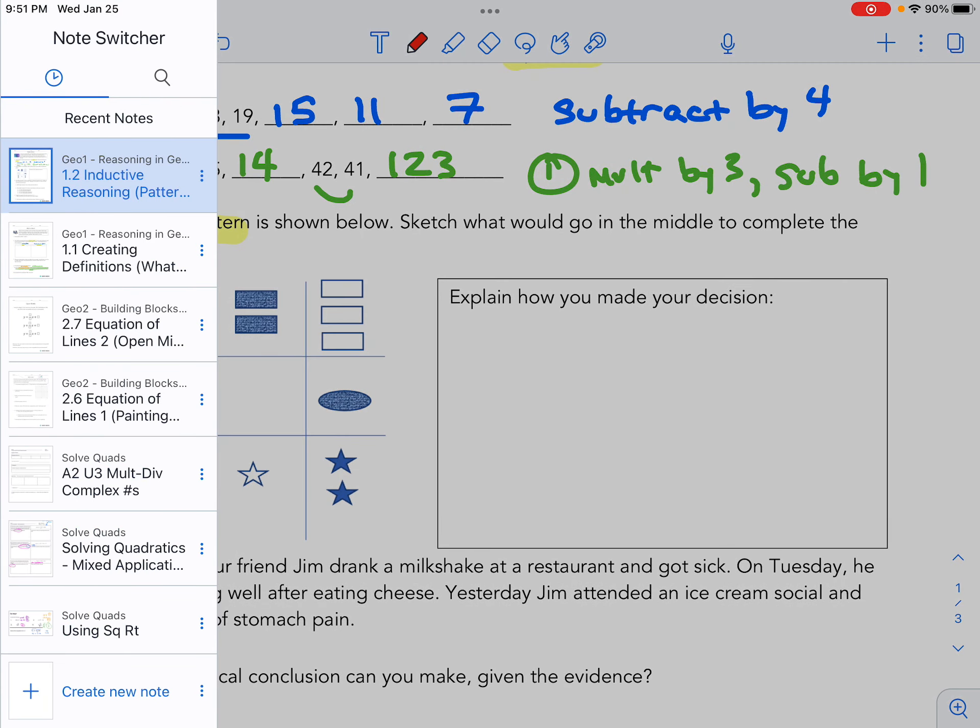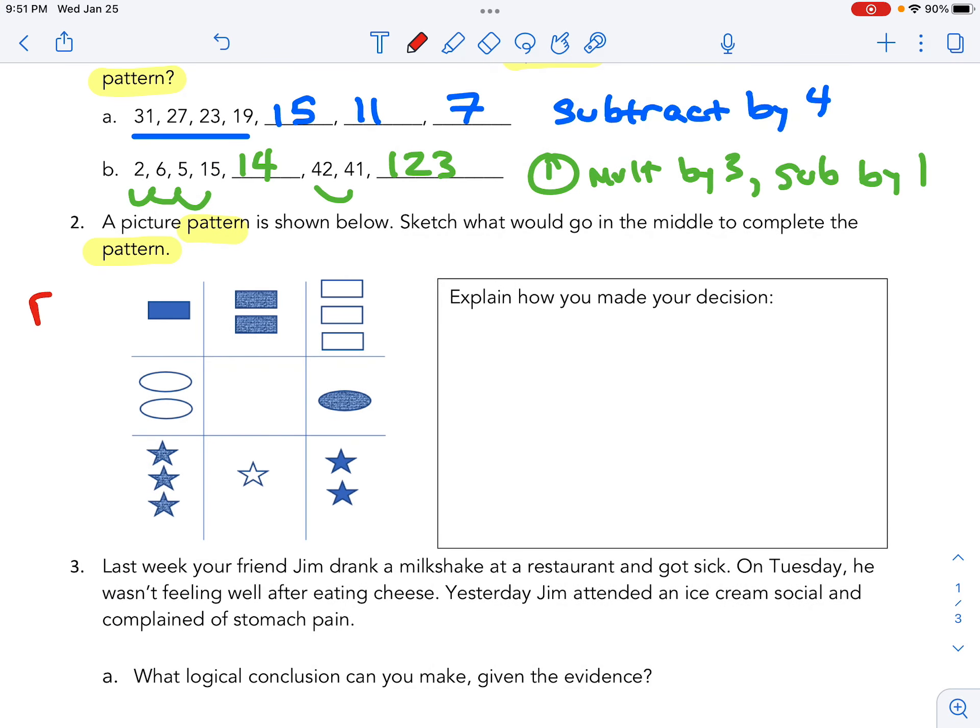We have one row with rectangles, one row with ovals, and one row with stars. This helps us start understanding the pattern.